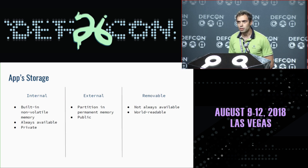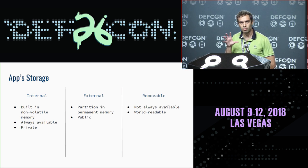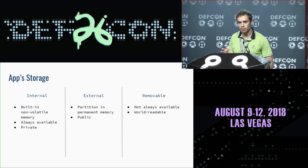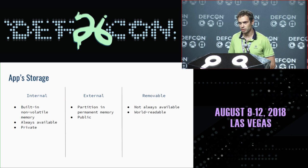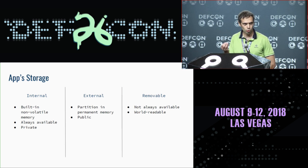There are three types of Android app storage. Internal storage is built-in memory — always available and private for each app. No one can get access to an app's internal storage except the app itself. External storage, on the other hand, is a partition in internal storage but shared between all apps.